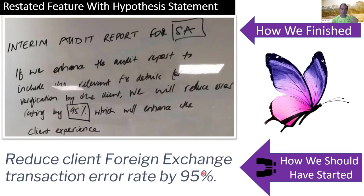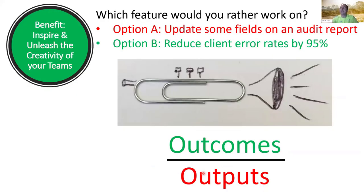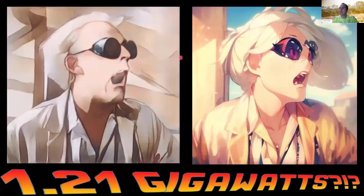Compare option A: 'Update some fields in an order report' — pretty boring — versus option B: 'Reduce client errors by 95%' — that gives me a reason to get up in the morning, something I can brag about to my family, the value I added this week. This reiterates the point: outcomes are much better than outputs. We want features phrased as outcomes.